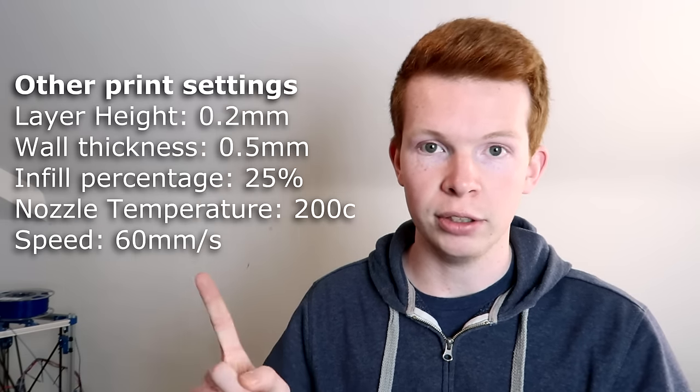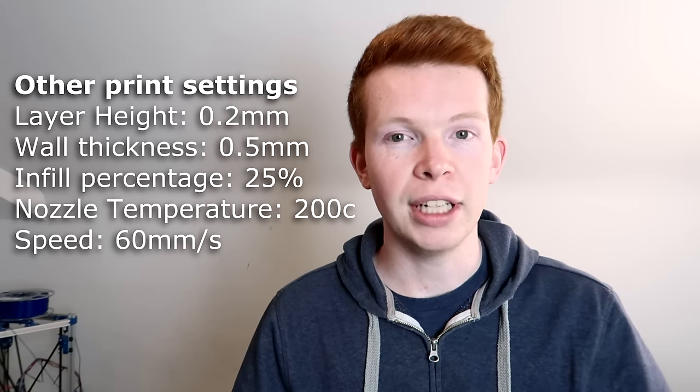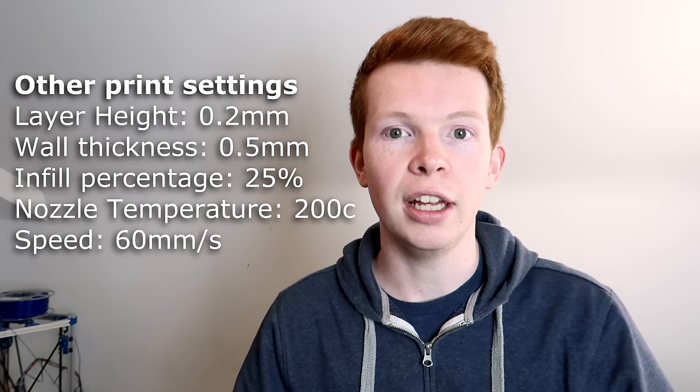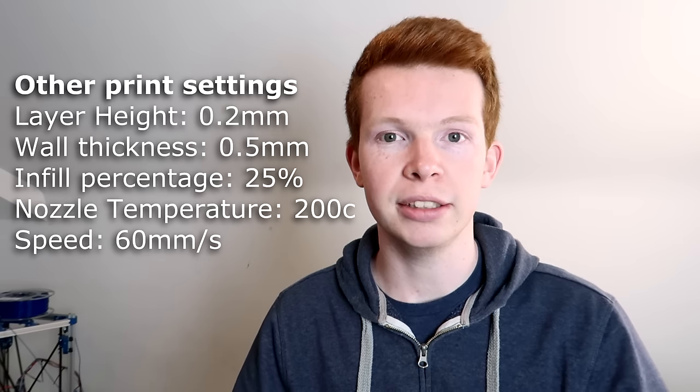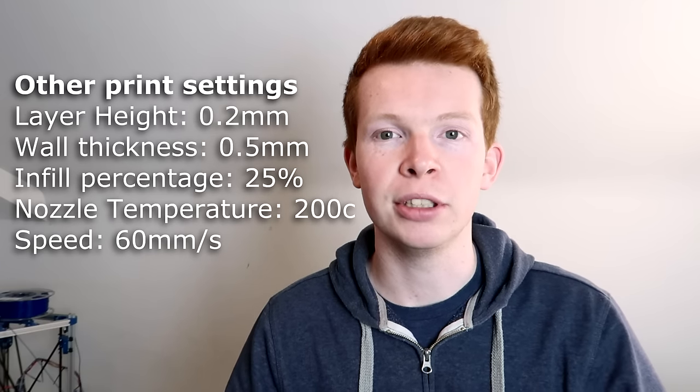What I recommend is you have a small skirt around the outside, just a couple layers just to keep the wing adhered to the bed properly. The other parts of the plane such as the winglets, the elevons, the fuselage, and also the canopy cover can be printed in whatever setting you want. The settings that I use are as follows: I use 25% infill, two outer layers, and three top and bottom layers. I also printed them at 200 degrees and at 60 millimeters per second because it didn't matter so much about the layer strength.